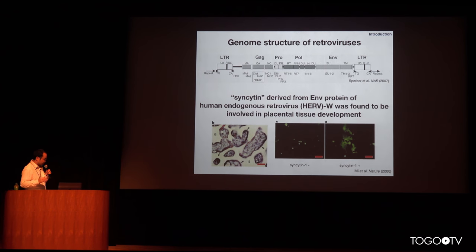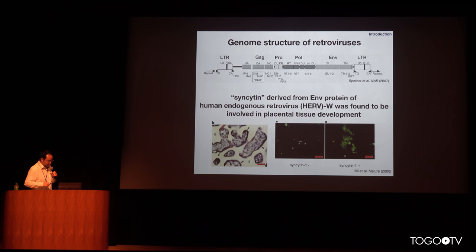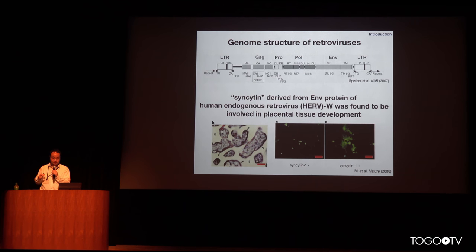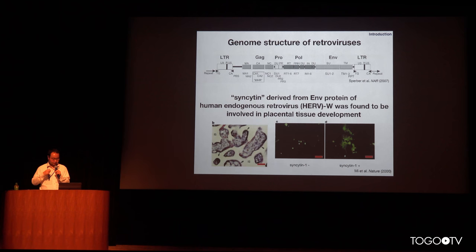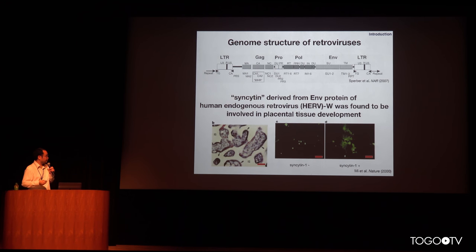Most of these elements are derived from retroviruses. The structure of retroviruses includes LTR, a non-coding element, and the coding elements GAG, protease, polymerase, and envelope. In particular, the envelope is a glycoprotein — a spike protein — used to infect other cells. EVE-derived genes sometimes obtain function in host cells.